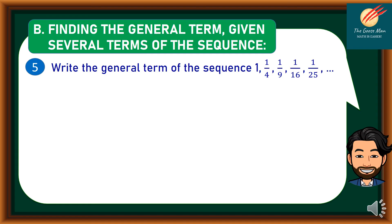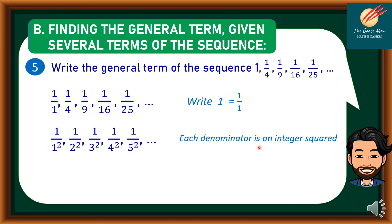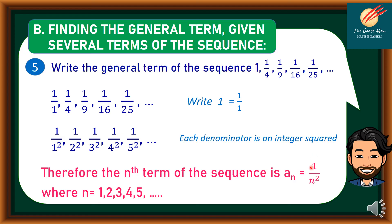For Problem 5, write the general term of the sequence 1, 1/4, 1/9, 1/16, and 1/25. Note that 1 can be rewritten as 1 over 1. Observing the denominators: 1 is 1 squared, 4 is 2 squared, 9 is 3 squared, 16 is 4 squared, and 25 is 5 squared. Each denominator is an integer squared. Therefore, the nth term of the sequence is a sub n equals 1 over n squared, where n equals 1, 2, 3, 4, 5, and so on.